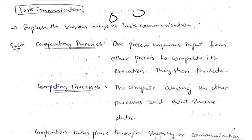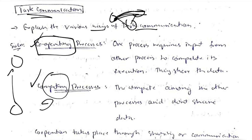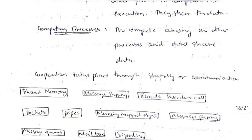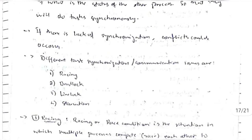Task communication refers to sharing data between different processes. There are two types: cooperating processes, which share data either by sending it or sharing the same memory location; and competing processes, which compete with each other to access the same data rather than sharing it. Cooperation can occur through shared memory or communication mechanisms such as message passing, remote procedure calls, sockets, pipes, memory maps, message queues, mailboxes, and signaling.